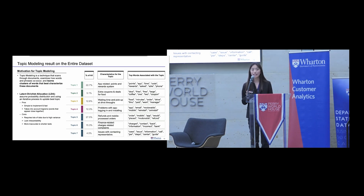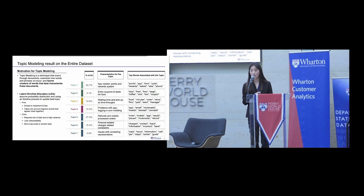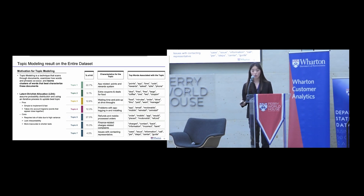For example, Topic 1 has to do with app-related things like points or the reward system, and the top words associated with this topic are: point, app, time, code, etc. After establishing these seven major topics, LDA goes through every single complaint and gives a score representing the probability that that complaint falls under each topic — creating seven extra scores per complaint that we can use in the dataset.